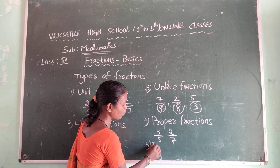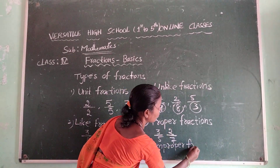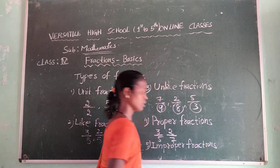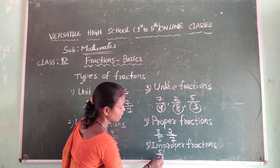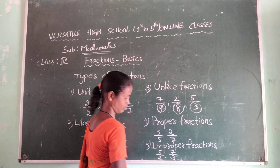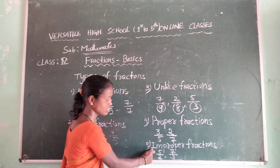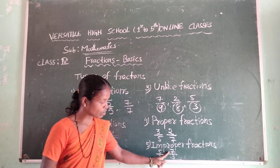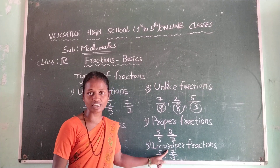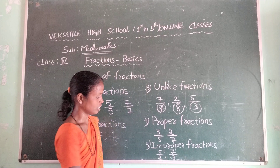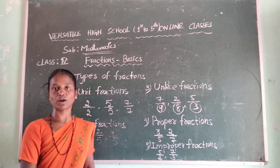Now we are going to improper fractions. Improper fractions are totally different from proper fractions. For example, five by two, seven by three. Observe that in this fraction the numerator is greater than the denominator. This type of fractions are called improper fractions. Koshik Chandra, are you listening to me? What is the numerator? Seven. And denominator is three. So numerator is greater than the denominator — this type is called improper fractions.